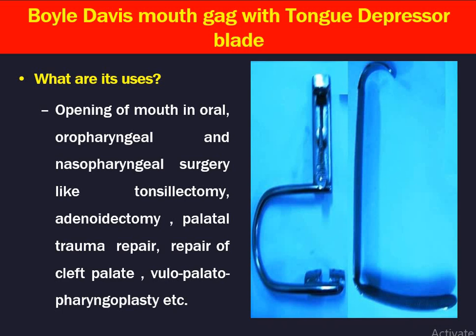It's the Boyle-Davis mouth gag with tongue depressor blade. They will ask you what are its uses. The use of Boyle-Davis mouth gag with tongue depressor is opening of the mouth in oral, oropharyngeal and nasopharyngeal surgery like tonsillectomy, adenoidectomy, repair of palatal trauma, repair of cleft palate, and sometimes uvulo-palato-pharyngoplasty surgeries. This mouth gag comes in different sizes — pediatric and adult — and the tongue depressor also comes in pediatric and adult sizes.